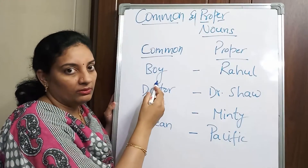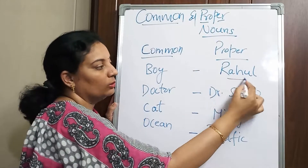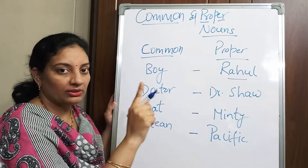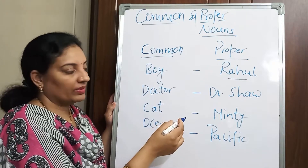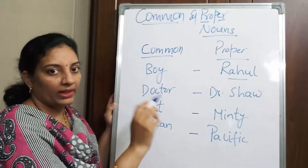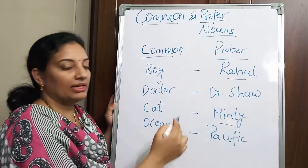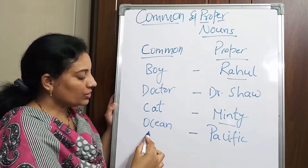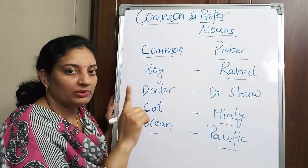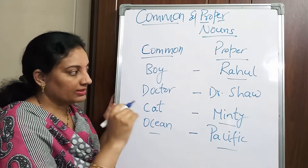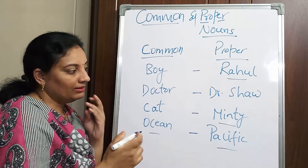For example, 'boy' is a common noun — I mean any boy in this world — whereas 'Rahul' is the name of one particular boy. 'Doctor' refers to any doctor, but 'Dr. Shaw' is the name of one particular doctor. 'Cat' is any cat, whereas 'Minty' is the name of one particular cat. 'Ocean' can be any of the five oceans, whereas 'Pacific Ocean' is the name of one particular ocean.